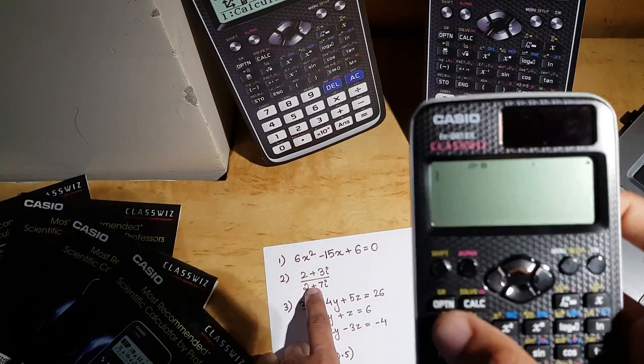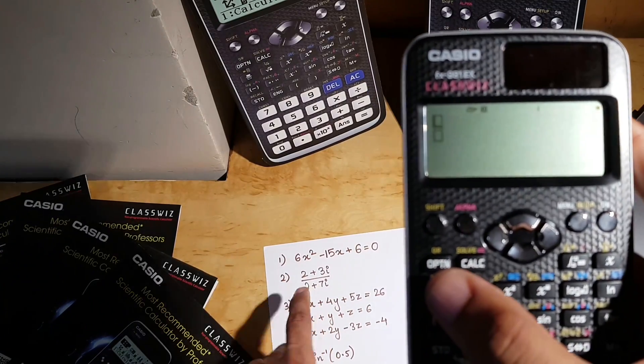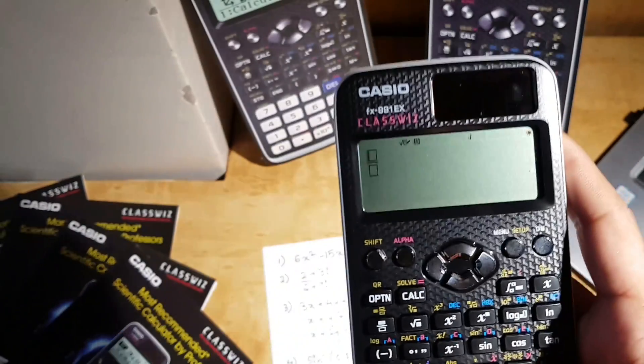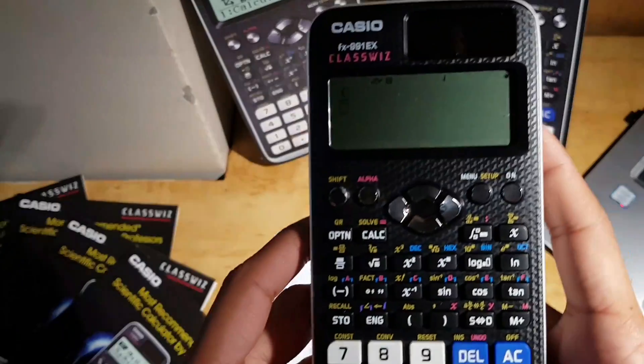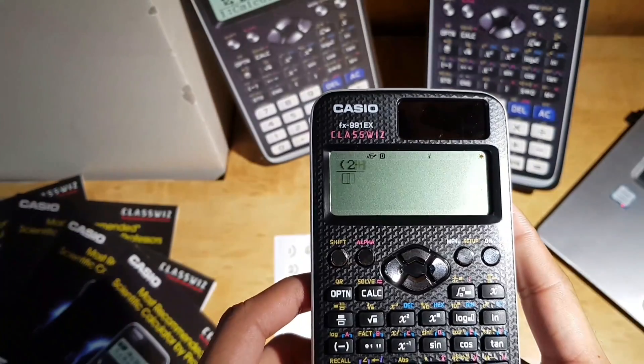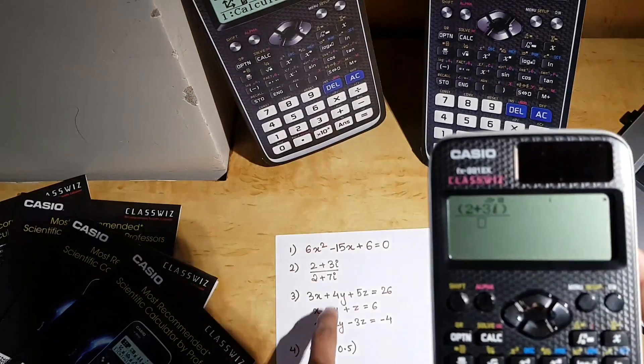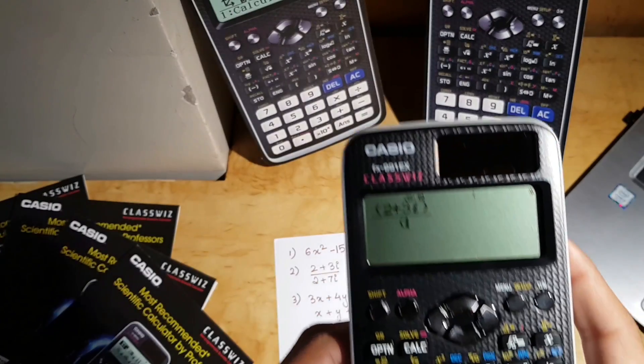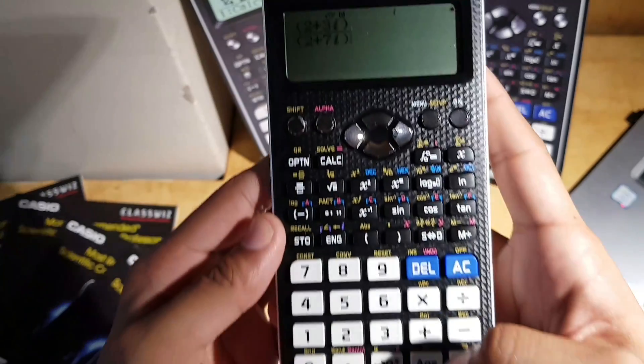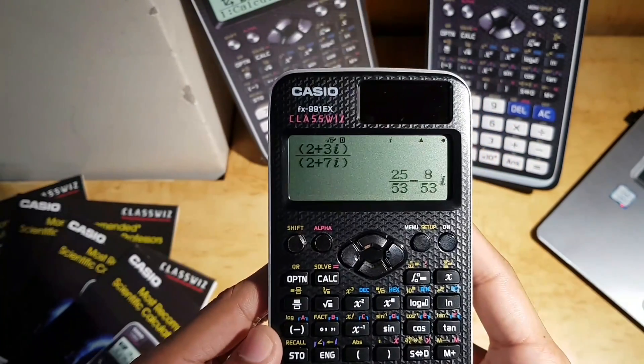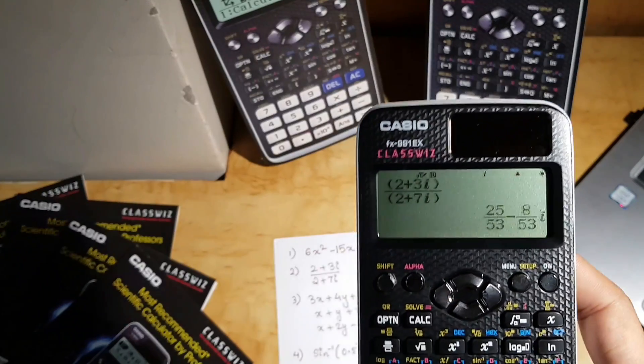In order to do that, first we'll use this to add a fraction. I'll open a bracket. The question is 2 plus 3 iota. 2 plus 3 iota, and then in the denominator, it's 2 plus 7 iota. 2 plus 7 iota, and I'll close the bracket and enter. And here is the answer of our complex equation. That's how you use that.